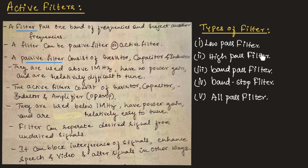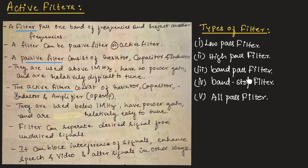The high-pass filter is often used to remove low-frequency noise that is present in a signal. A band-pass filter allows the signal with a certain frequency range to pass through and attenuates the signal with frequency outside the range. It is useful for isolating specific frequency bands in a signal.